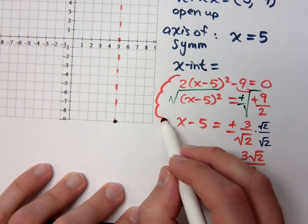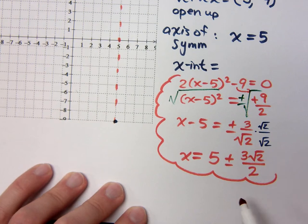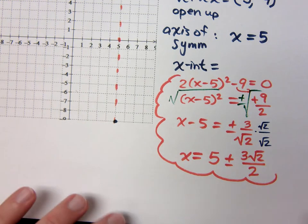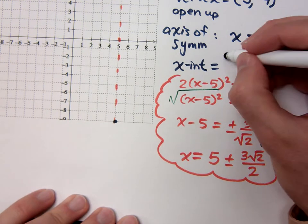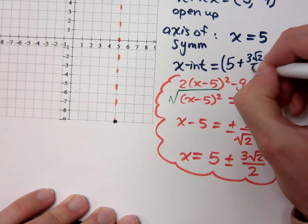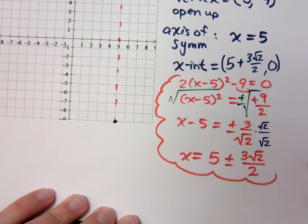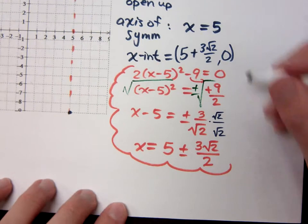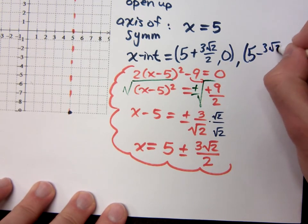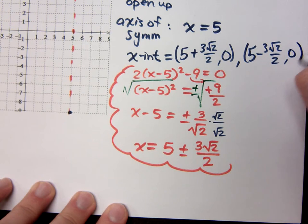So this right here, it is ugly. I agree with you. I mean, it's not like I made the problem up or anything. The x-intercepts, you will list them as this: 5 plus 3 square roots of 2 over 2, comma, 0. And then your other one, 5 minus 3 square roots of 2 over 2, 0.